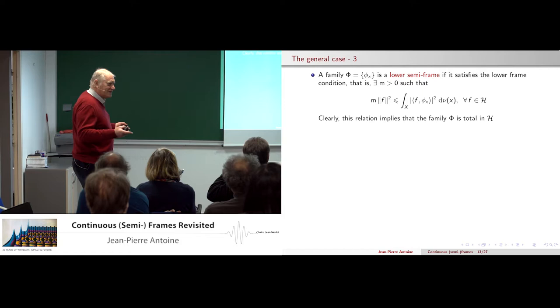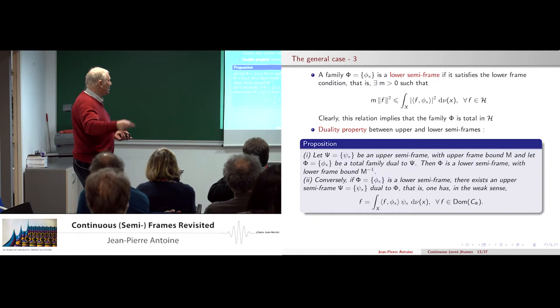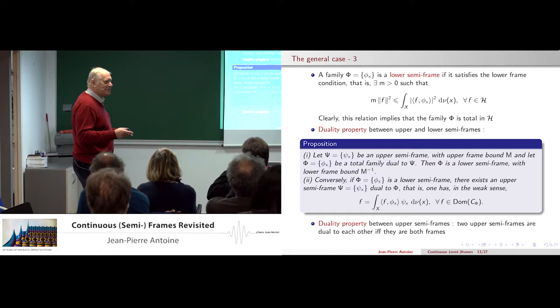Switching to the lower semi-frame and then duality between the two. A lower semi-frame has a lower bound but no upper bound. One interesting theorem: if you have an upper semi-frame and take a total family dual to it, then that dual family is a lower semi-frame. Conversely, if you have a lower semi-frame, you can construct an upper semi-frame dual to it. So there is duality between upper and lower. If you take two upper semi-frames and want them to be dual, it is impossible — they have to be frames. Duality is either between two frames, or between upper and lower, but you cannot mix.